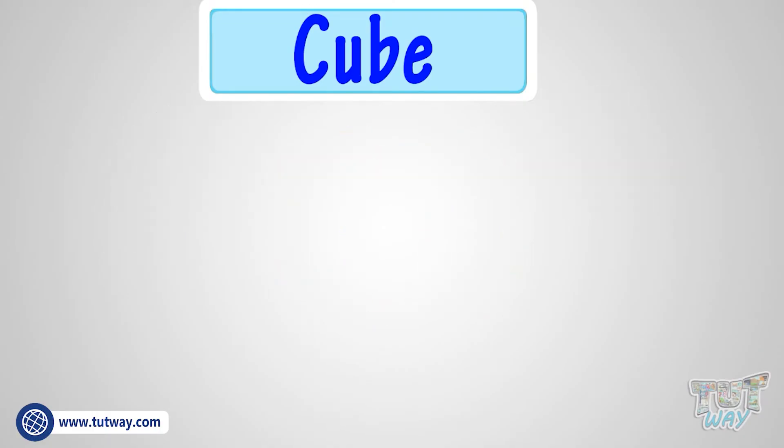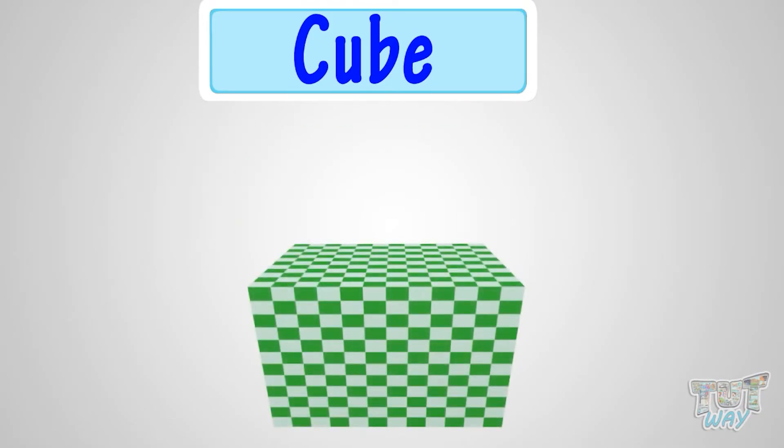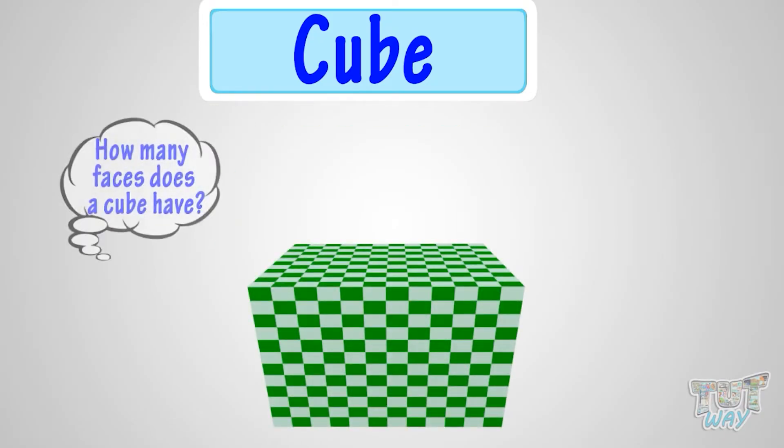Now it's time to know what are faces. Faces are the individual surfaces of a solid object. Let's take example of a dice to learn how many faces does a cube have, as a dice is a perfect example of a cube. Let's count the faces of a dice, which is a cube.